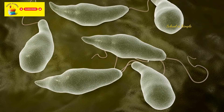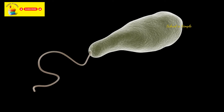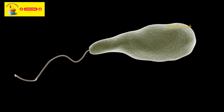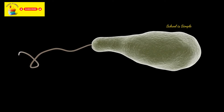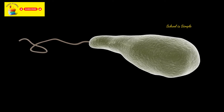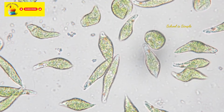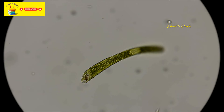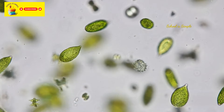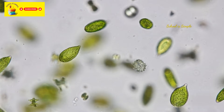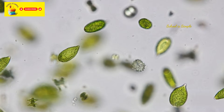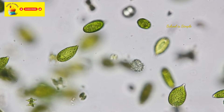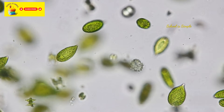So what is Euglena? Euglena is also a unicellular organism, also known as a single-celled protist, that thrives in freshwater environments. Euglena possesses characteristics that resemble both plant and animal traits. This is how a Euglena looks under a microscope. Euglenas have an elongated body shape with an outer covering called the pellicle. They usually appear green due to the presence of chloroplasts, which contain chlorophyll and enable photosynthesis.